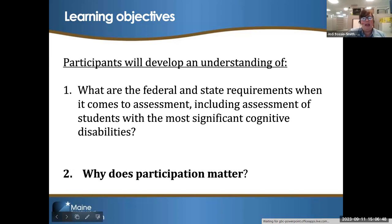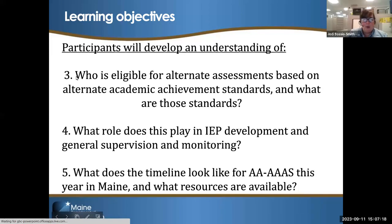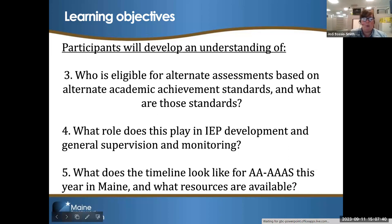Let's dive right in. We have five learning objectives for the session today and a lot of content. We'll start with a brief overview of the statutory requirements when it comes to state assessments for all students, including students with significant cognitive disabilities. Two, we'll discuss why participation matters beyond those requirements. After that, we'll touch on eligibility for participation in the AA-AAAS and Alternate Academic Achievement Standards, which will lead into considerations around IEP development. Finally, we'll provide a general overview of the timeline for alternate assessments and the 1% work in Maine this year.